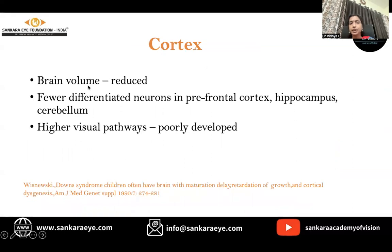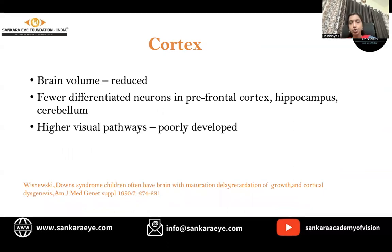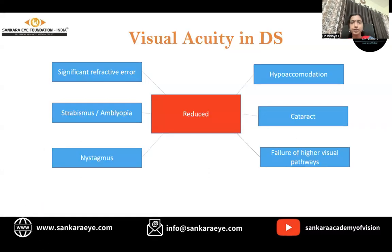Regarding the cortex, brain volume is globally reduced compared to normal counterparts. There are fewer differentiated neurons in the prefrontal cortex, hippocampus, and cerebellum. Higher visual pathways are poorly developed. As such, visual acuity in patients with Down syndrome is reduced, possibly due to syndromic and refractive error, strabismus and associated amblyopia, nystagmus, hypoaccommodation, cataract, and failure of higher visual pathways.